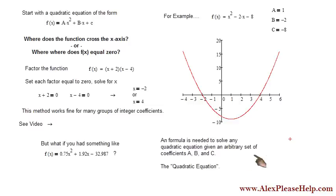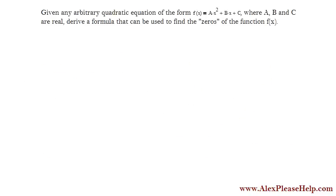A formula is needed to solve any quadratic equation given an arbitrary set of coefficients a, b, and c. This is known as the quadratic formula. So given any arbitrary quadratic equation of the form ax squared plus bx plus c, where a, b, and c are real, derive a formula that can be used to find the zeros of the function f of x. So the first step is to set the function equal to 0, ax squared plus bx plus c equals 0.